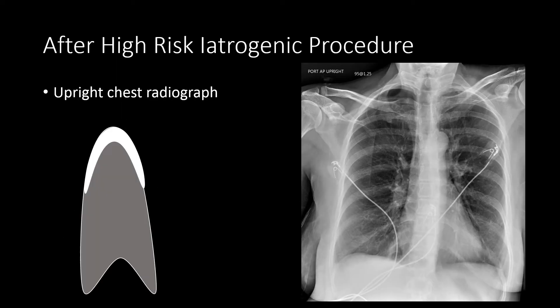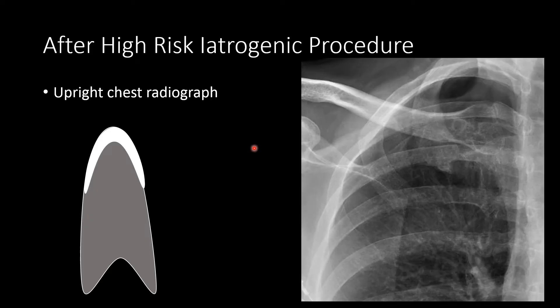After a high-risk iatrogenic procedure, you will often obtain an upright chest radiograph to assess for the presence of a pneumothorax. The upright chest radiograph is essential to increase the sensitivity for a pneumothorax. Gas, here represented by white, with the gray being the lung, in an upright chest radiograph, the gas helps outline and separate the lung apex from the chest wall, creating a pleural line and a lucency with absent lung markings, giving a high specificity for pneumothorax.